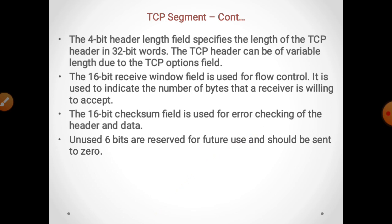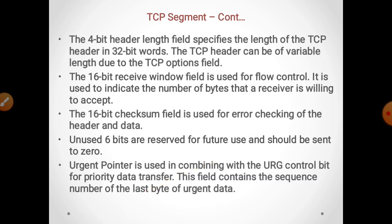Six bits are reserved for future use and should be set to 0. The urgent pointer is used in combination with the urgent control bit for priority data transfer. This field contains the sequence number of the last byte of urgent data being sent in the segment.